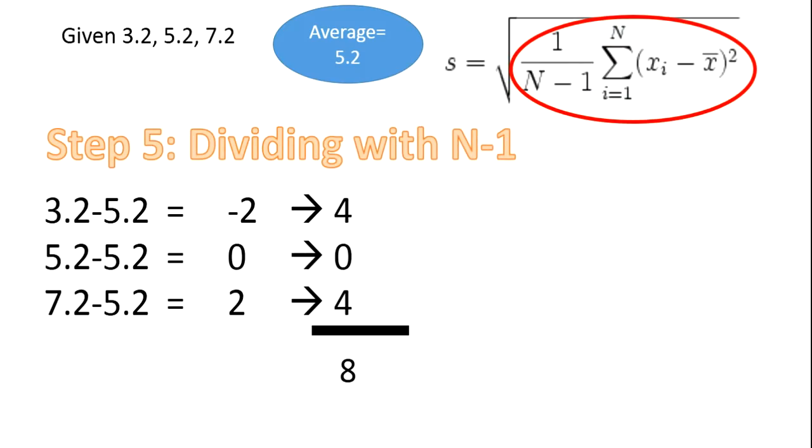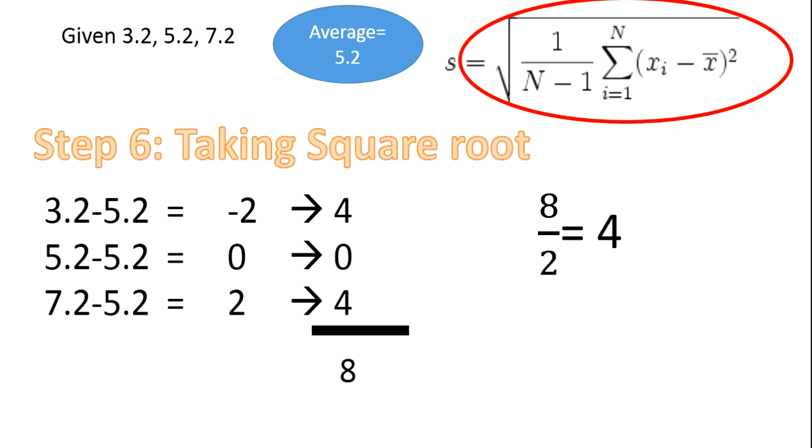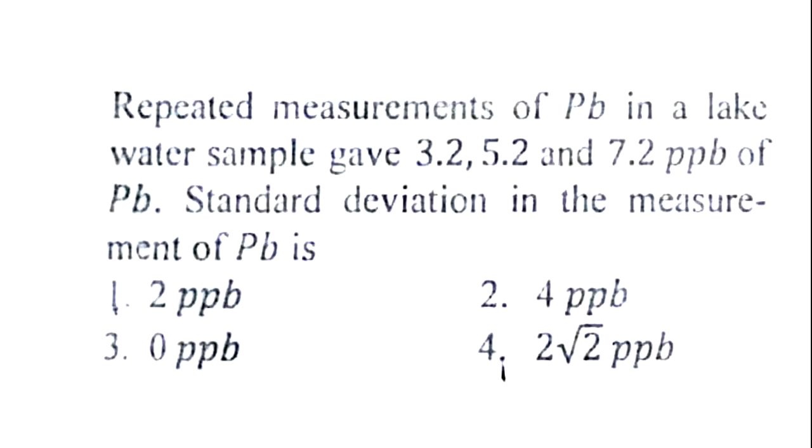Then in the next step, divide them with n minus 1. That is 8 by 2, which will be giving the value 4. And then next we have to take the square root of the value. Root of 4, we know that it is 2.